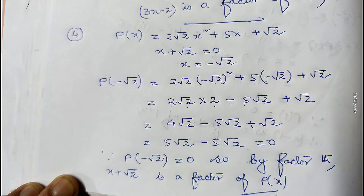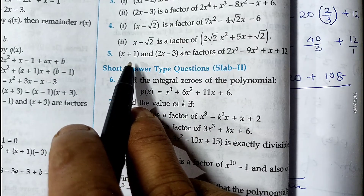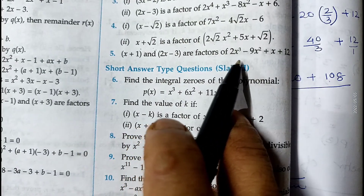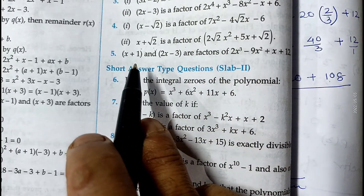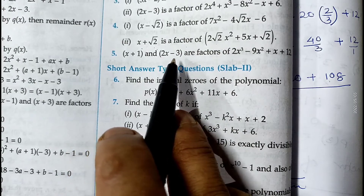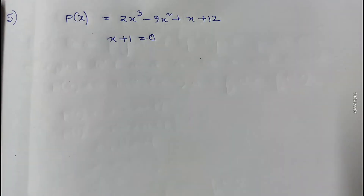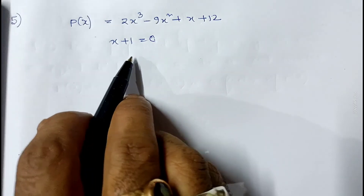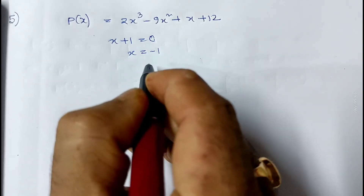Let me show the last sum from this exercise, question number 5. We have to prove that x plus 1 and 2x minus 3 are both factors of 2x cubed minus 9x squared plus x plus 12. First we check that x plus 1 is a factor. We make x plus 1 equal to 0, so x equals minus 1.